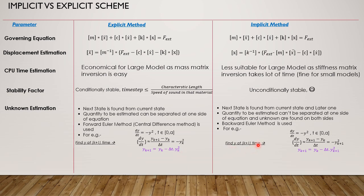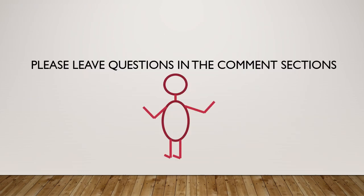Similarly for the implicit scheme, the unknown quantity and the known quantity will occur on the same side of the equation, as observed. These points have already been discussed so I have not gone into further detail. This was about the basic differences and similarities between your explicit and implicit methods. Please leave questions in the comment section — thank you so much for listening.